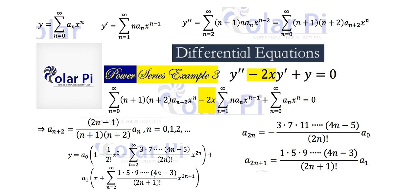In the first example and part of the second, we were able to recognize the sigma expressions in our solution as easy-to-recognize Maclaurin series — some recognizable function. That's not the case here. We can't recognize either of these as the Maclaurin series of some known function, and sometimes that's just the way it is. Alright, I'm done here — hope you learned a lot, take care.